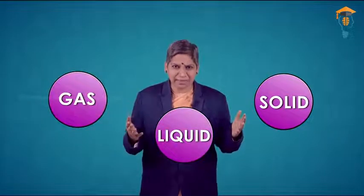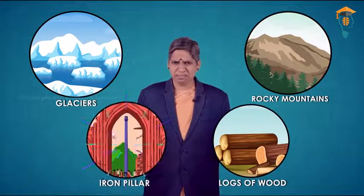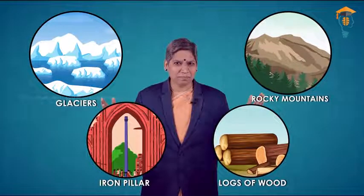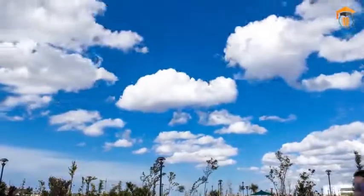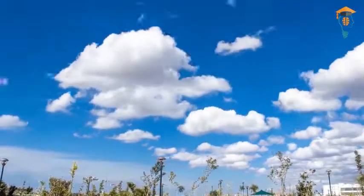We are surrounded by matter everywhere, and whatever we come across falls into these three states of matter: solid, liquid, or gas. Look at the rocky mountains, huge glaciers, logs of wood, iron pillars — all are solids. Water bodies like rivers and lakes represent the liquid state, and the air that surrounds us is a mixture of gases.